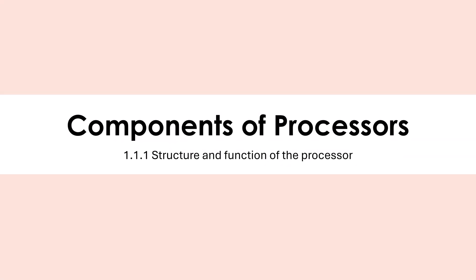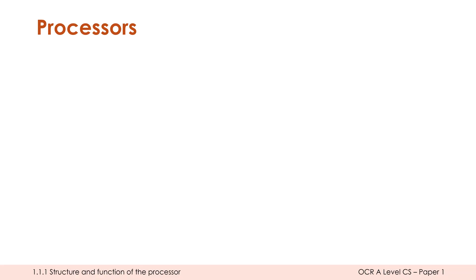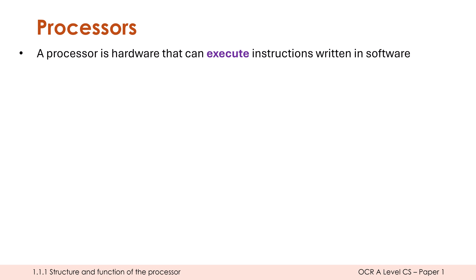Hello and welcome to the first content video of OCR A-level Computer Science Paper 1. We're going to start by looking at processors. This is the first of a few videos on this, but let's start by talking about the components of most typical processors. Before we do so, let's just say what a processor is. A processor is a hardware device that can execute instructions written in software.